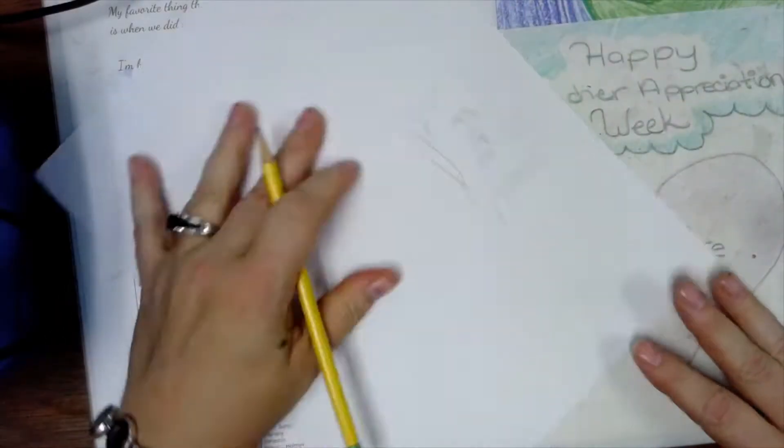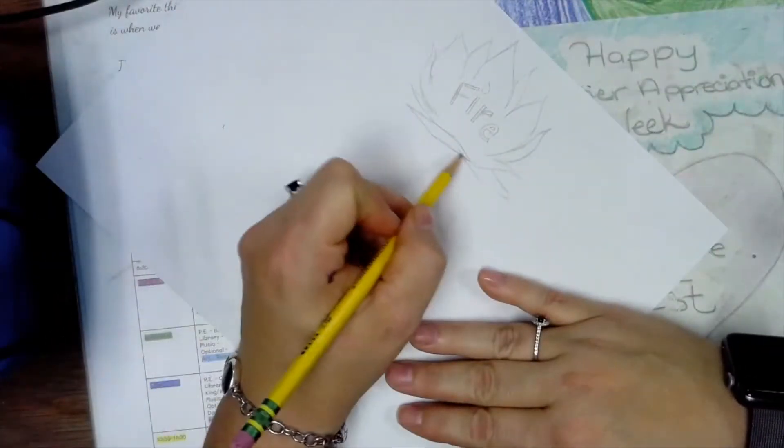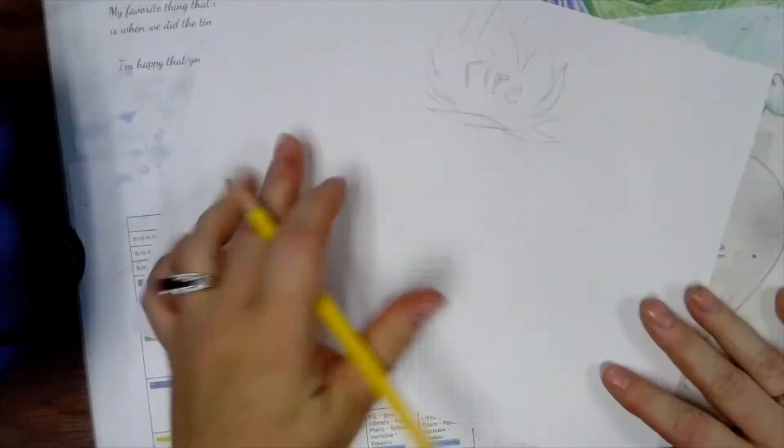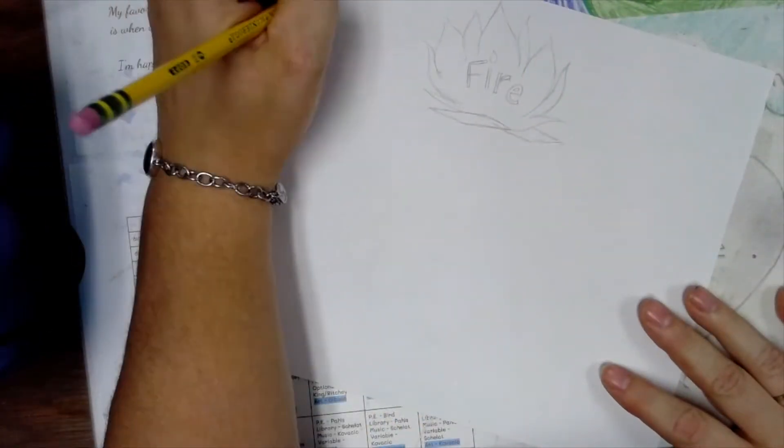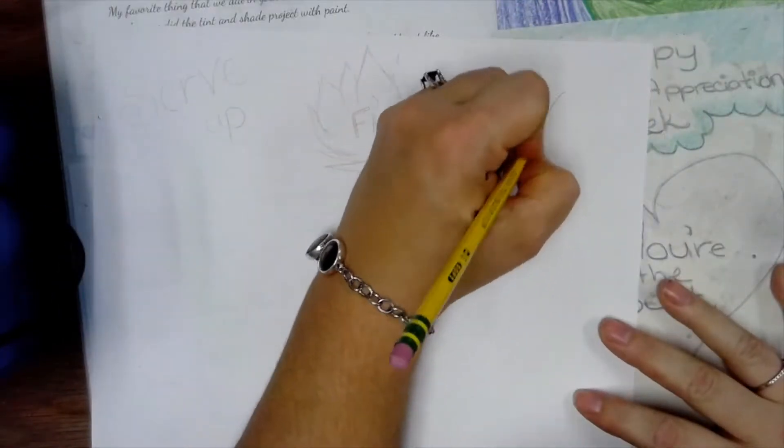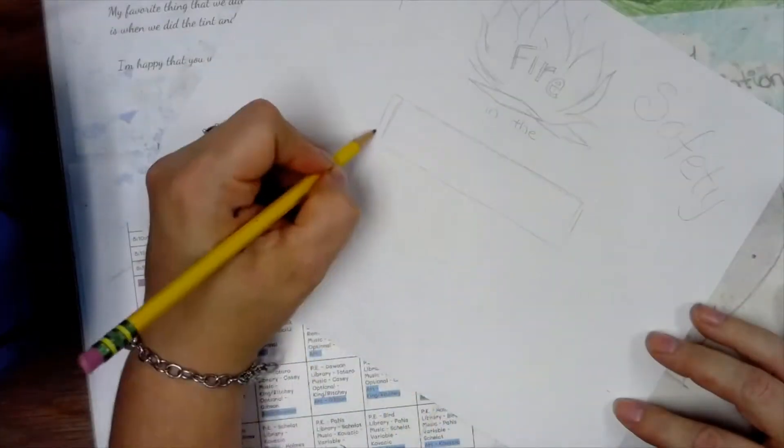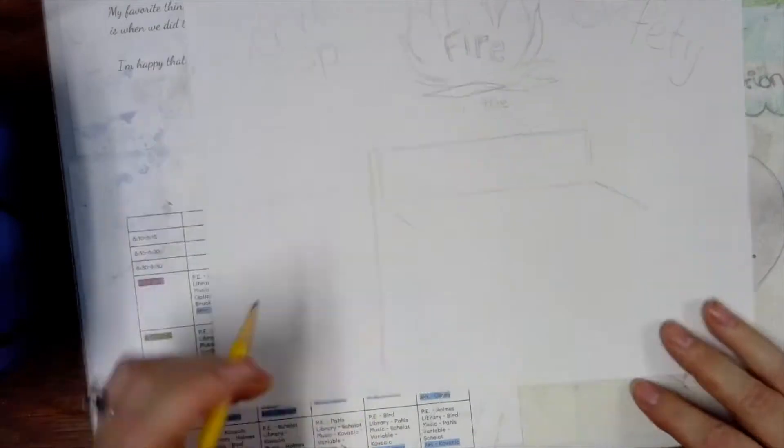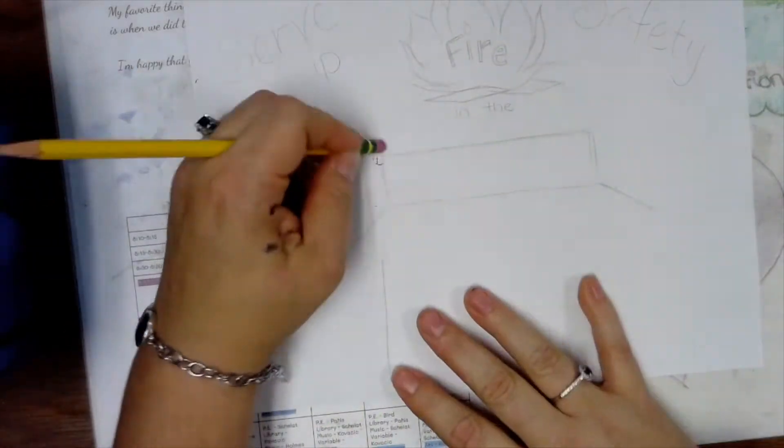Now, since we're using words, I'm going to create some block letters, which is easy to do. All you have to do is draw in your letters and then trace around the letters to make them more solid or thicker. Since the fire prevention theme this year is serve up fire safety in the kitchen, I'm going to use that as my theme.